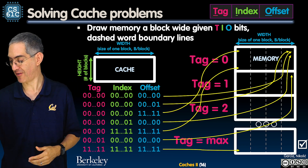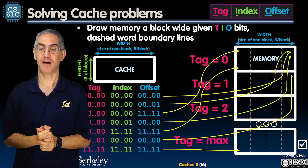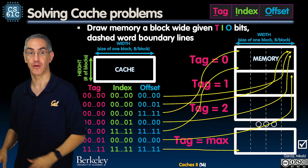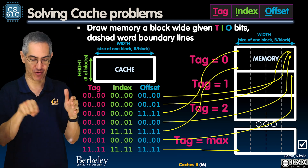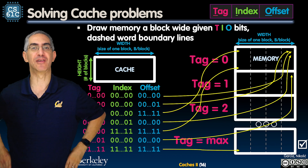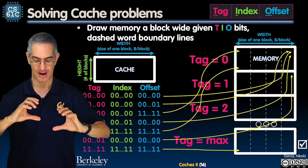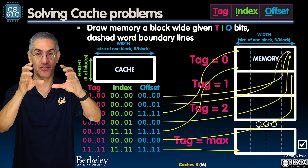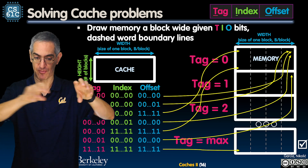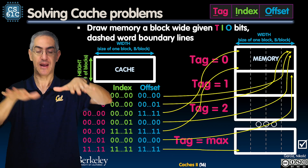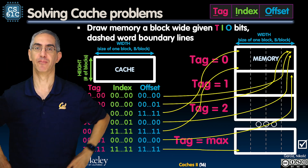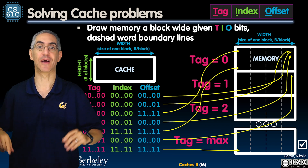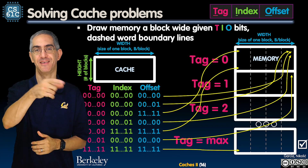I hope this is useful. I visually always draw the picture first for any cache problem. I draw cache and memory side by side at the same width, label the T, I, and O fields, and work from there. Take your time, draw the pictures, and you will get these problems right. See you at the next lecture.